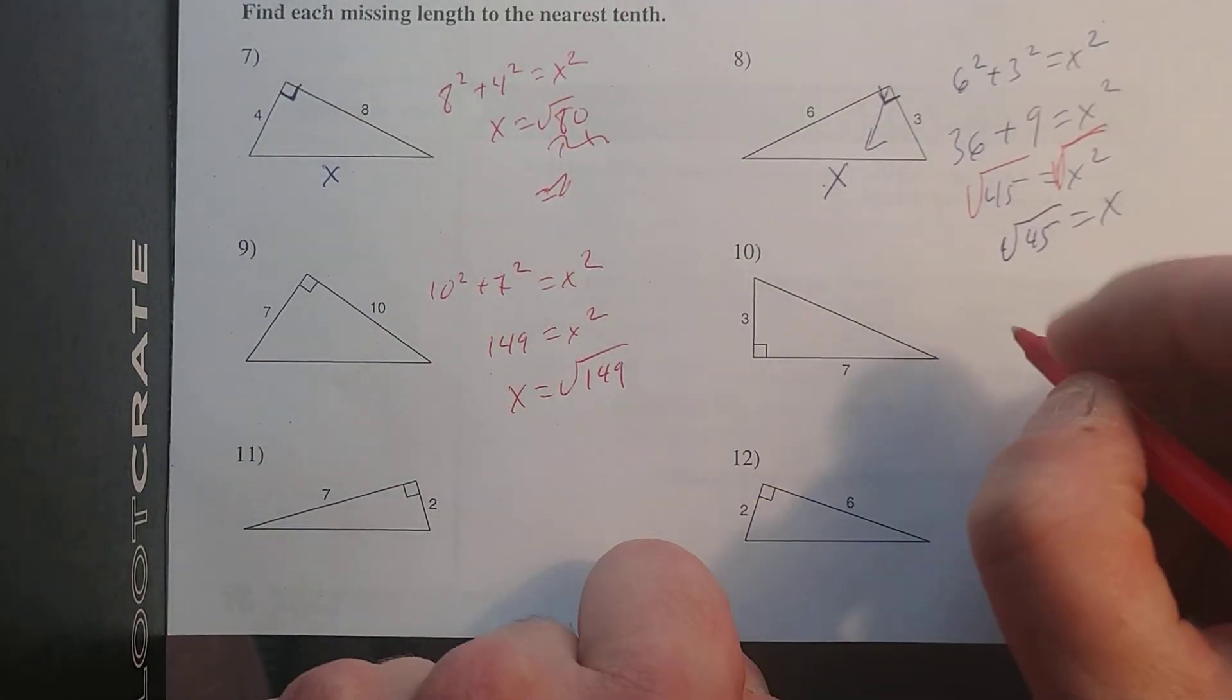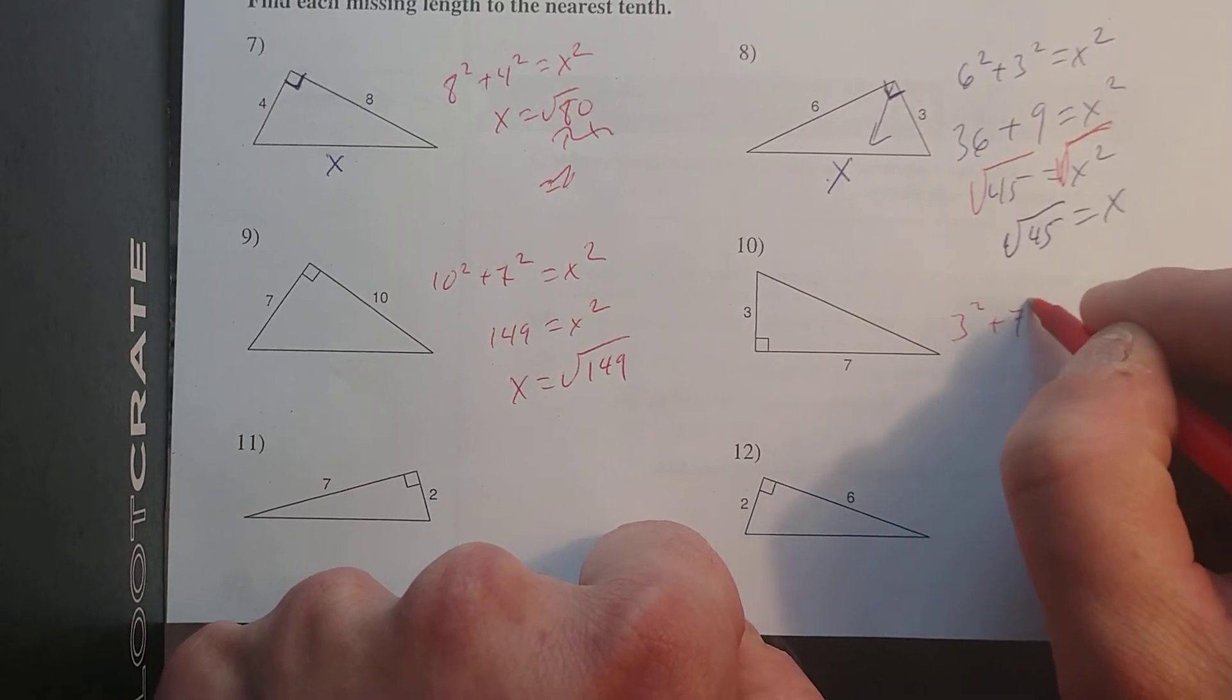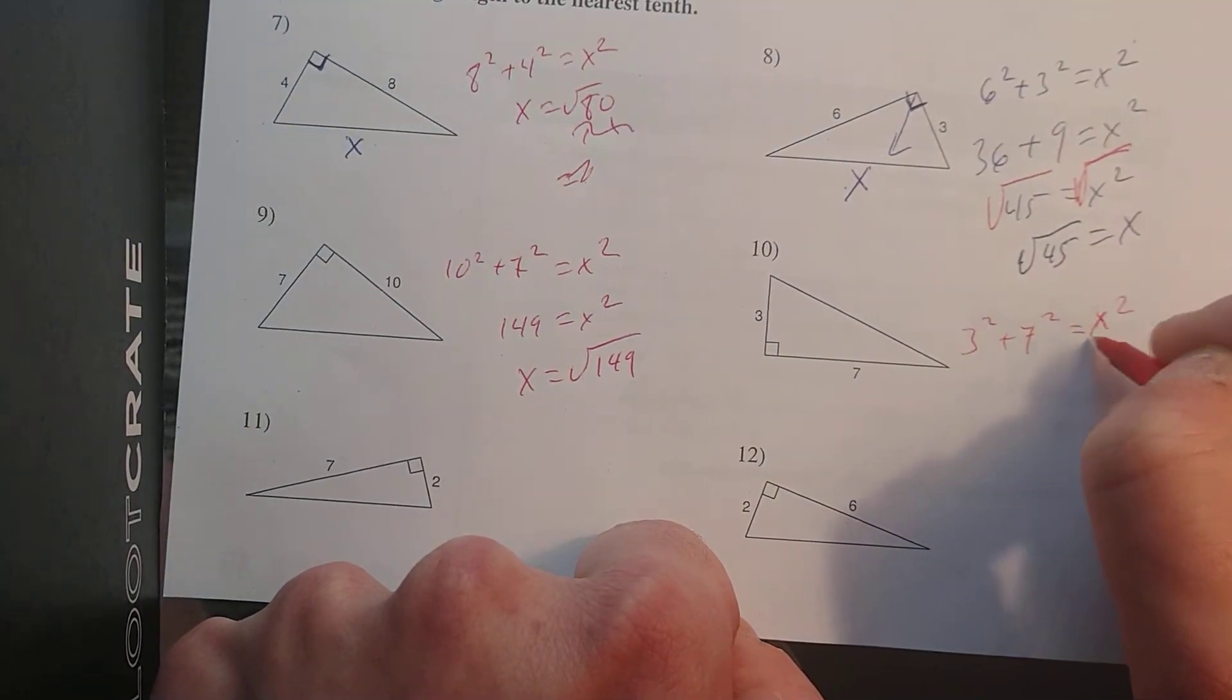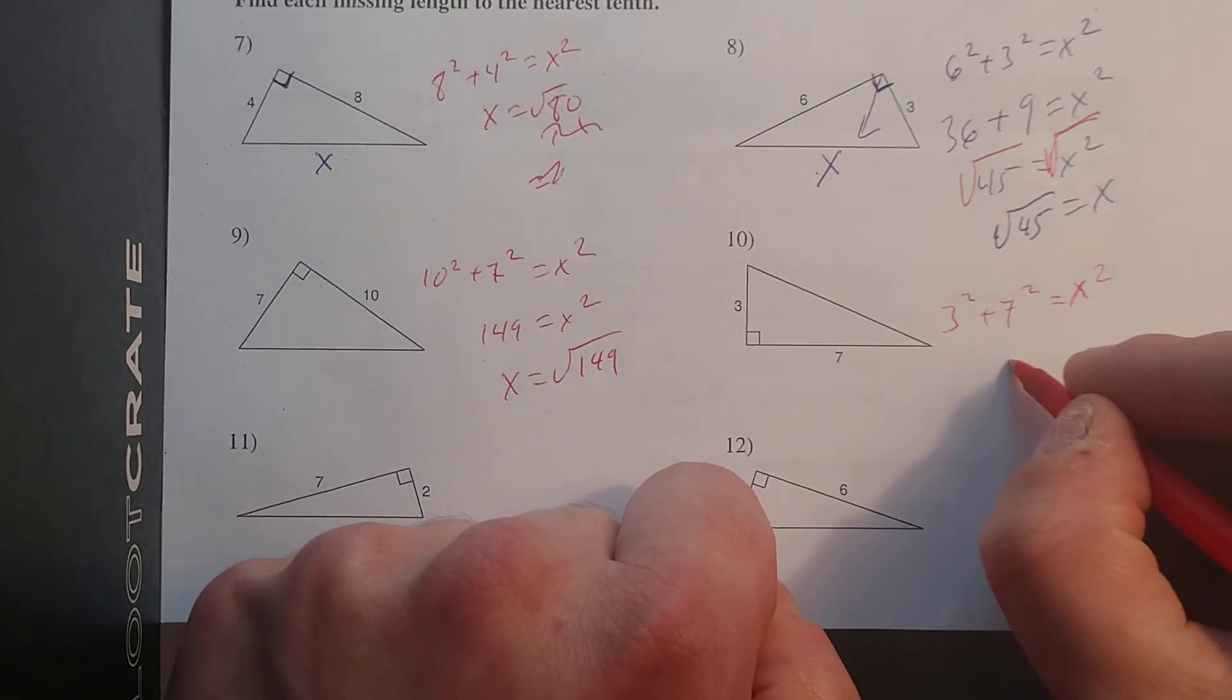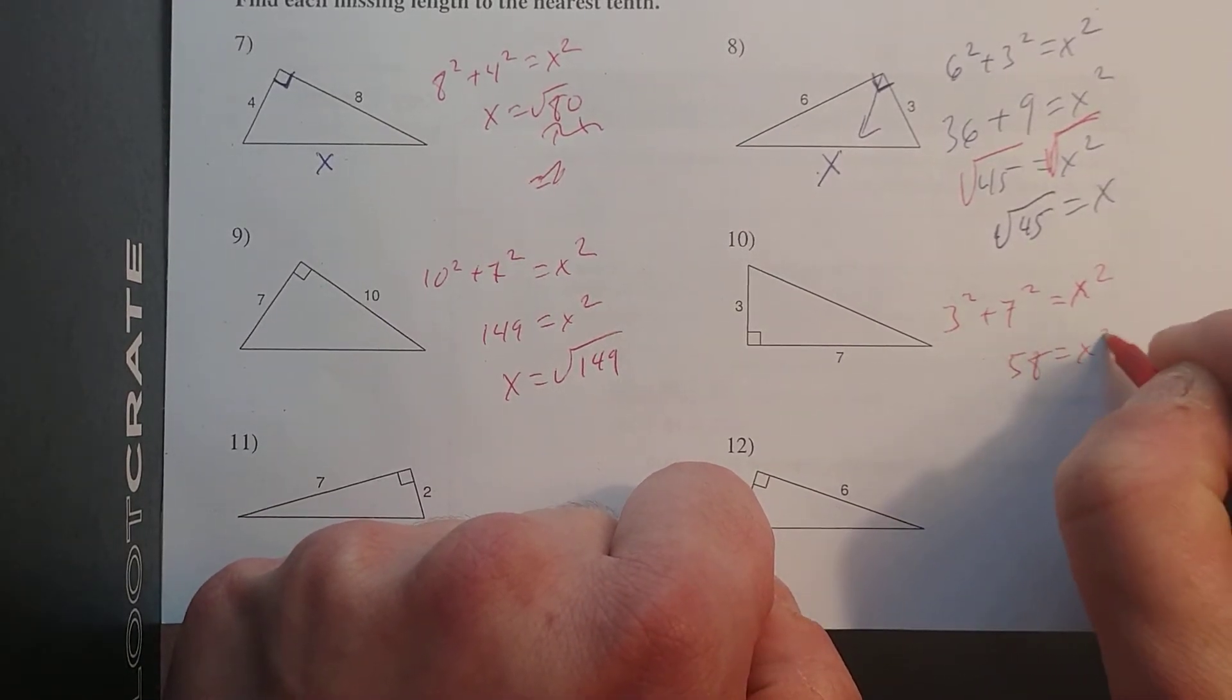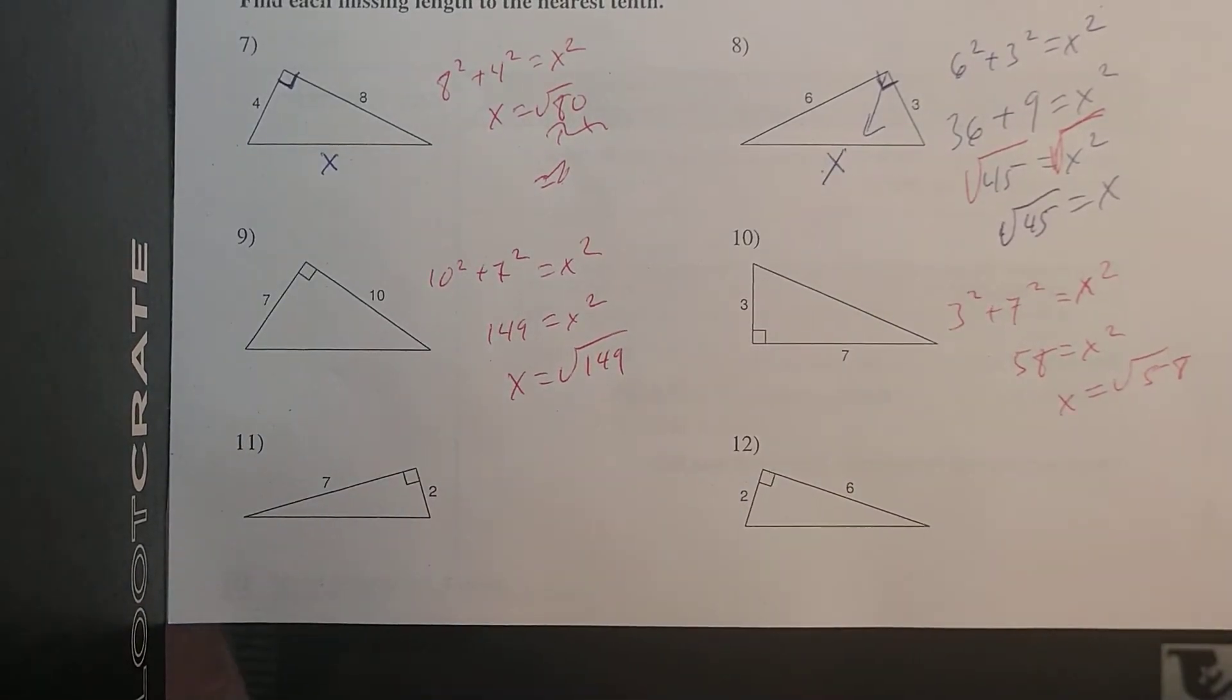For number 10, you're looking at 3² + 7² = X². And 3² is 9 plus 7² is 49. That's going to give me 58 = X². So X is the square root of 58.